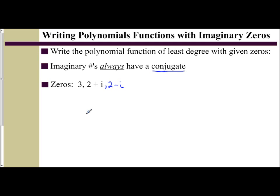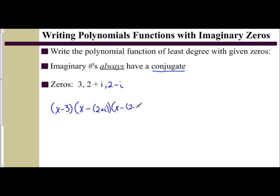This example is a little more difficult. The factors we set up are x minus 3 for the real zero. For the complex zeros, you always subtract the entire zero, so we have x minus the quantity 2 plus i, and x minus the quantity 2 minus i. The parentheses around the complex zeros are extremely important — we'll distribute out the imaginary ones together first.